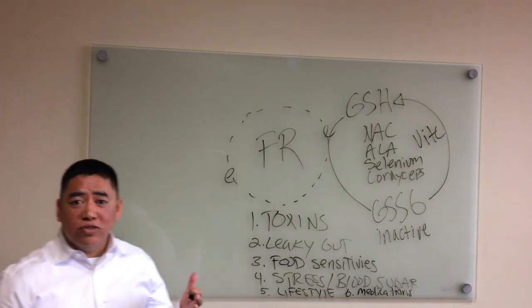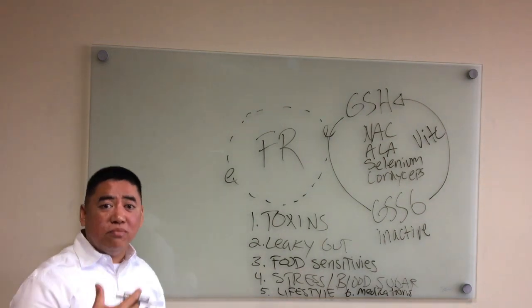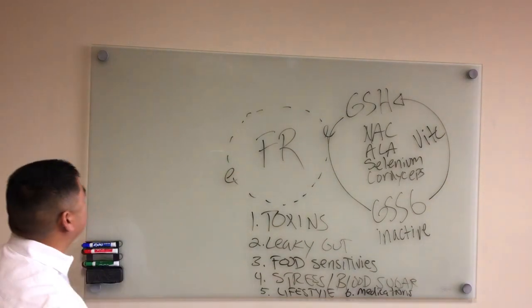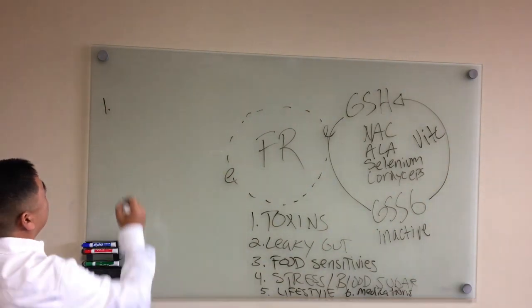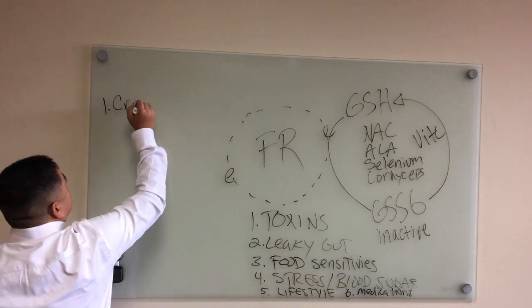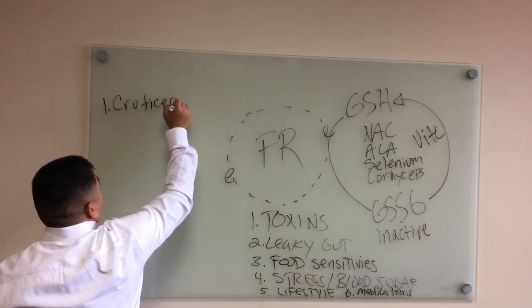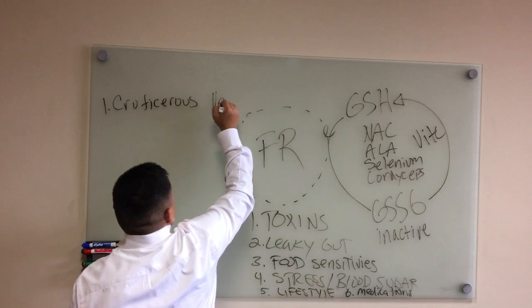So what kind of foods can you eat to basically boost your glutathione stores? Well, let's put that up here. Number one, cruciferous vegetables. These are your asparagus, your broccoli, your brussels sprouts, your bok choy.